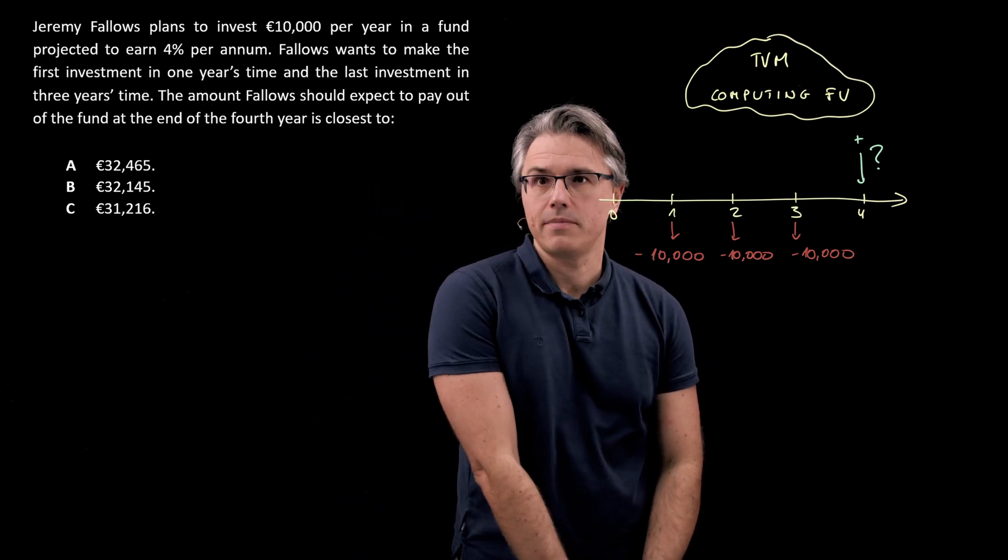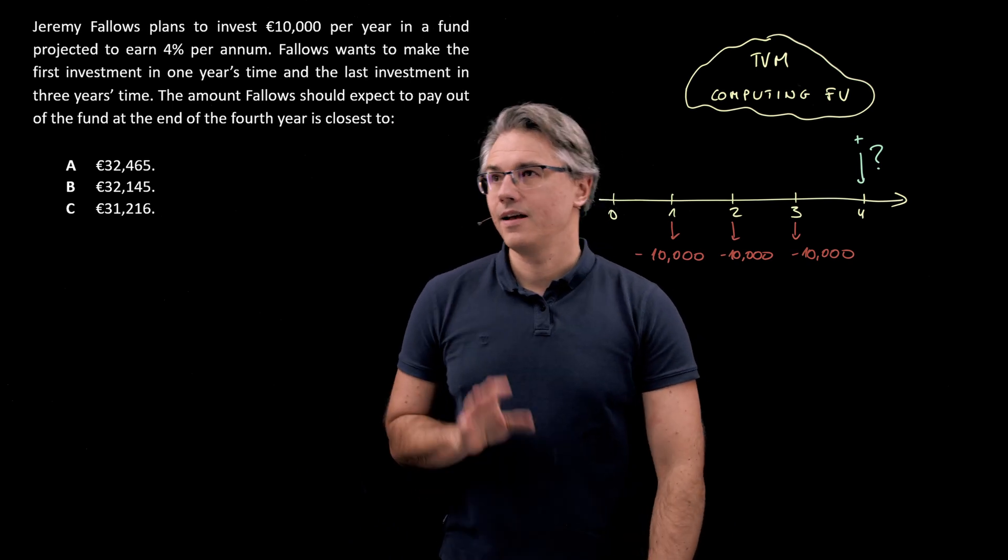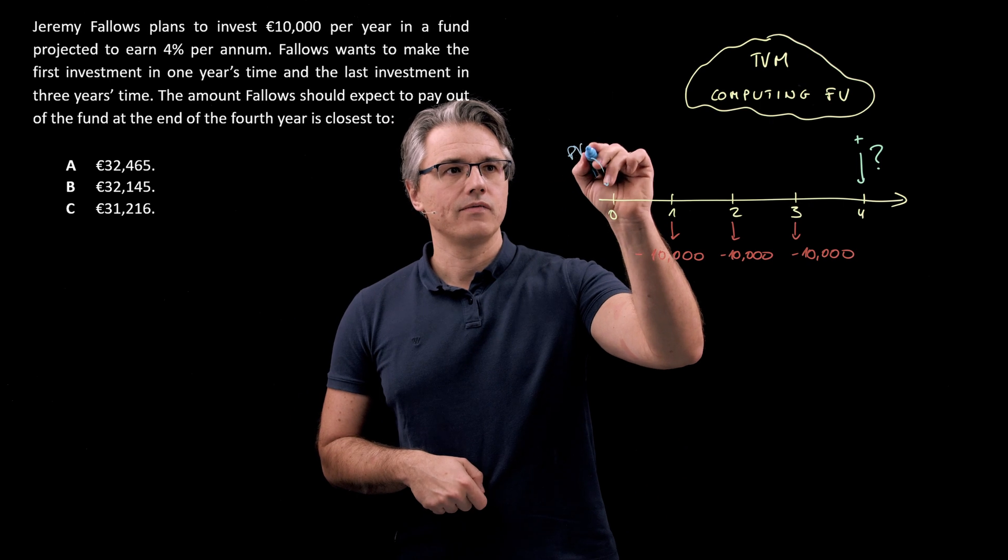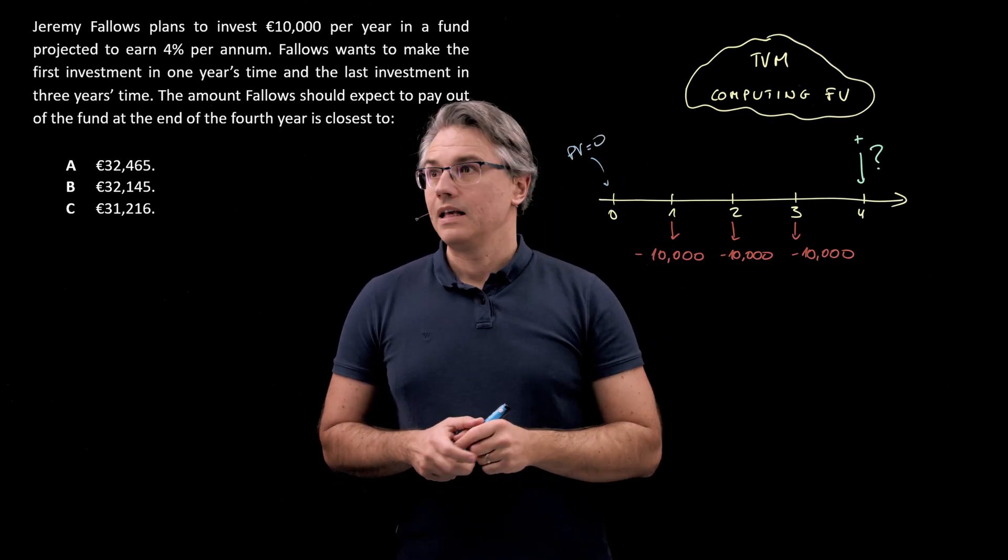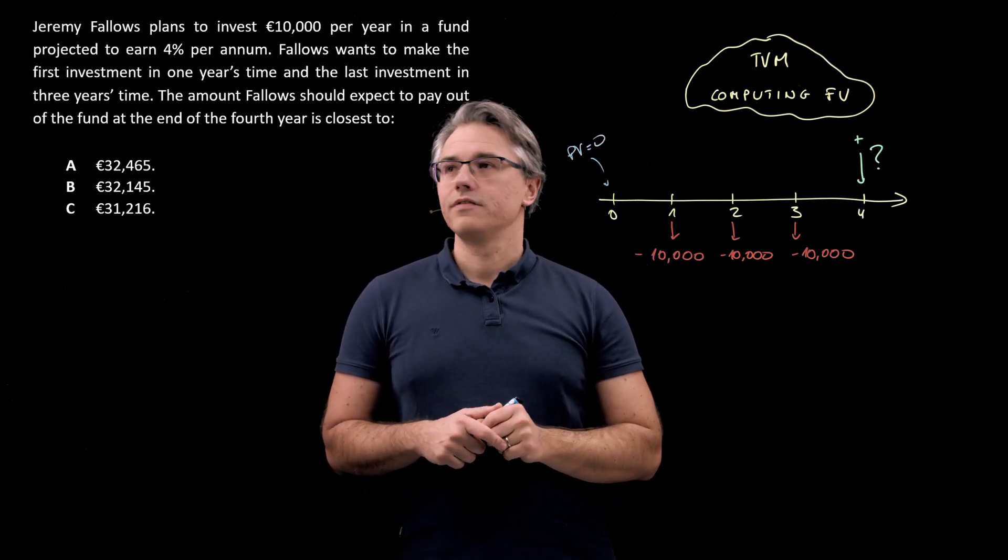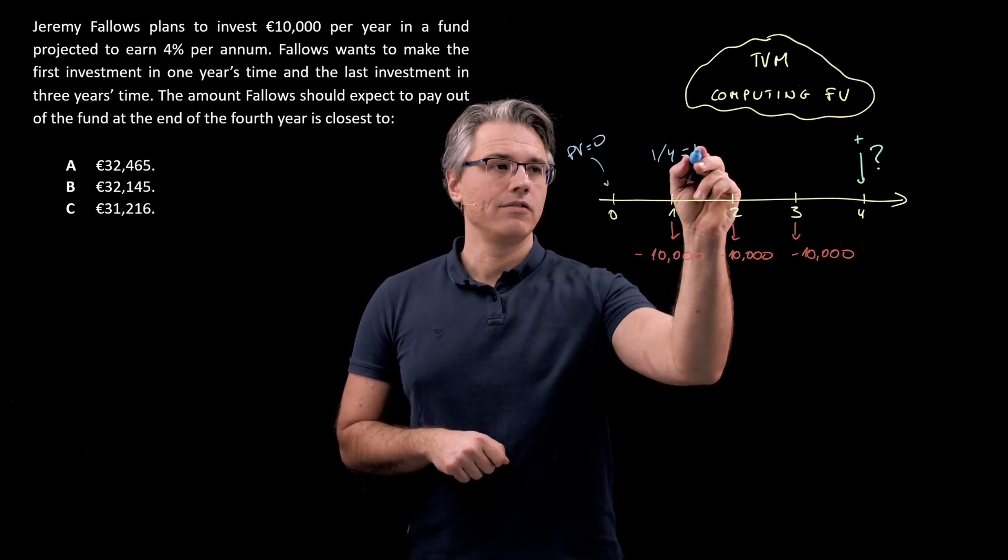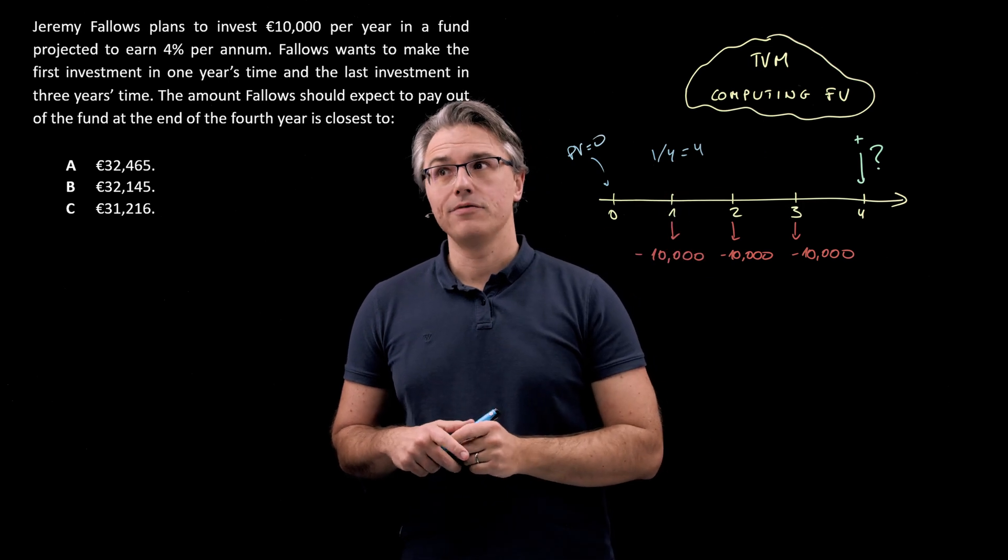Now there is no information about the fact that he's got anything in the account at the beginning so PV is zero and we are provided with a number for the rate of return so i over y on our calculator is going to be four.